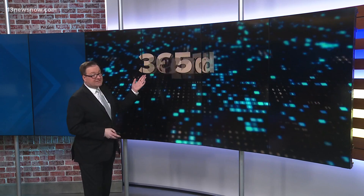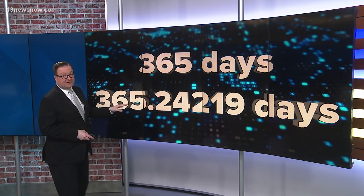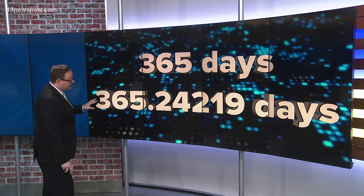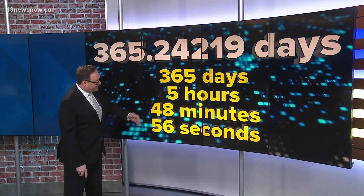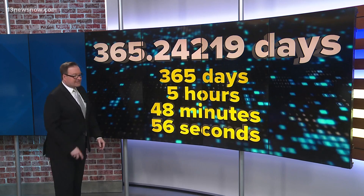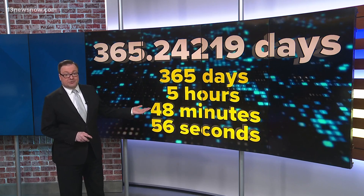Now, the calendar has 365 days, and you might remember that it actually takes a little bit longer — 365 and a quarter days for the Earth to go around the sun. Technically 365.24219 days, or that even breaks down to 5 hours, 48 minutes and 56 seconds. So every four years, we add on that extra day.